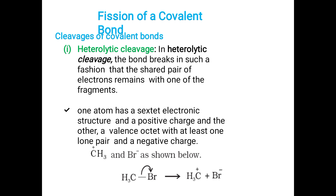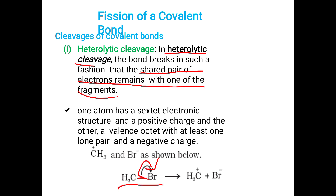Sometimes reactions occur due to fission of a covalent bond — cleavage of covalent bonds. The first type is heterolytic cleavage. In heterolytic cleavage, the bond breaks such that the shared pair of electrons remains with one of the fragments — only one atom gets the shared pair electrons. One atom has a sextet electronic structure and a positive charge, and the other has a valence octet with at least one lone pair and a negative charge. For example, in CH3Br breaking, the bond shifts towards bromine — all shared pair electrons transfer to Br, giving it a negative charge, and CH3 gets a positive charge (CH3+). Such cleavage is known as heterolytic cleavage.